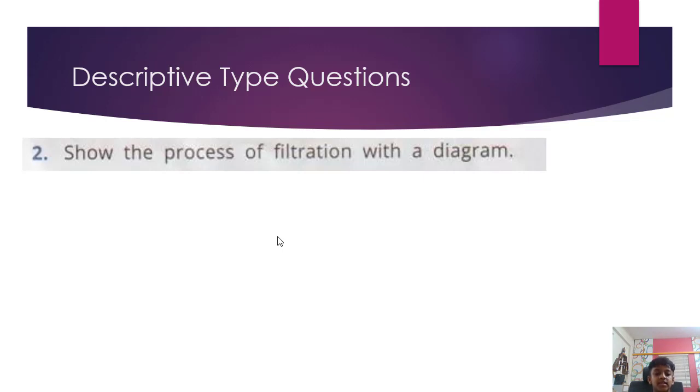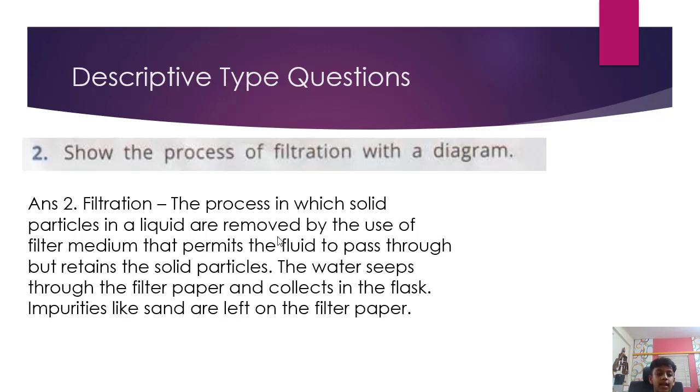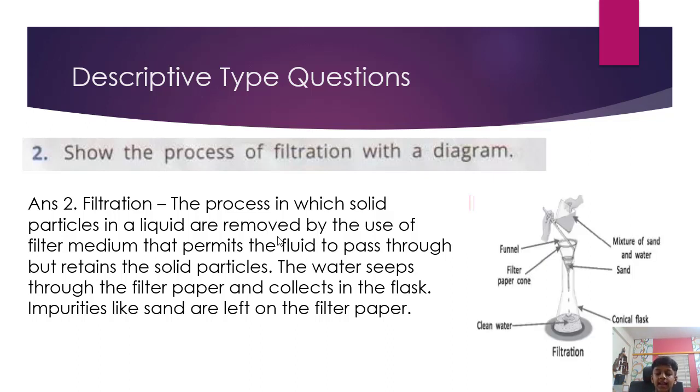Show the process of filtration with a diagram. Answer. Filtration: The process in which solid particles in a liquid are removed by the use of filter medium that permits the fluid to pass through but retains the solid particles. The water seeps through the filter paper and collects in the flask. Impurities like sand are left on the filter paper. And this is the diagram of filtration.